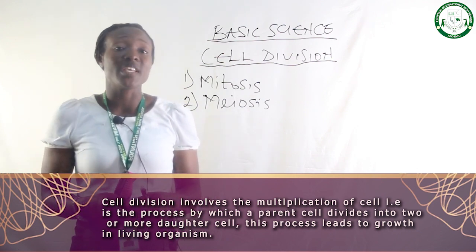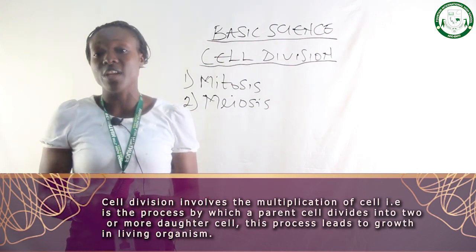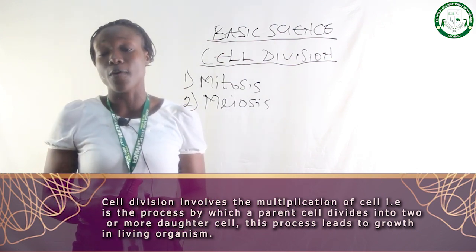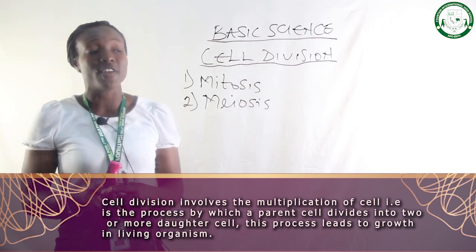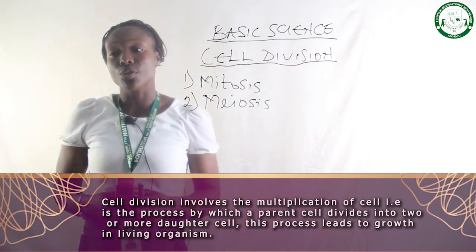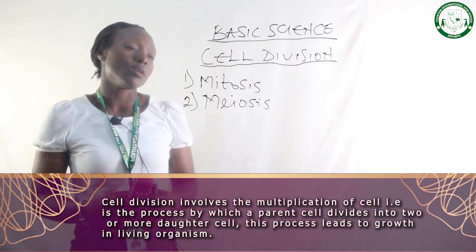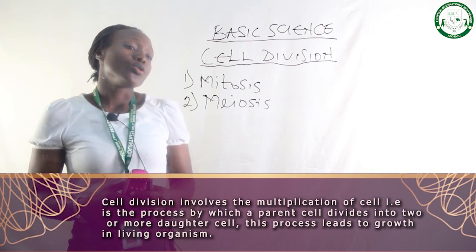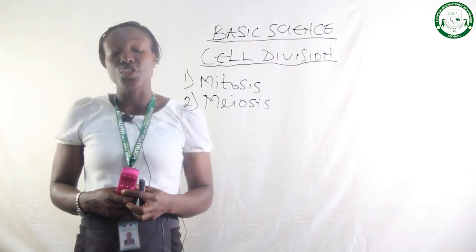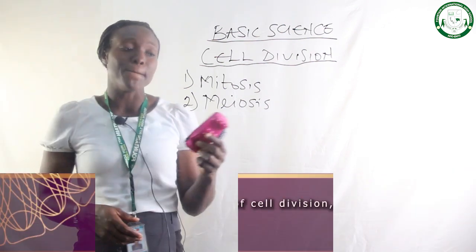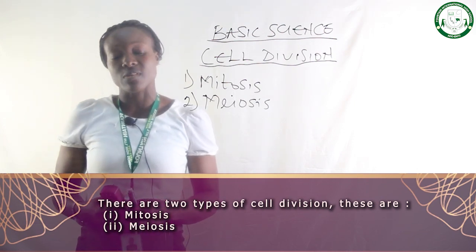Cell division is the basis of growth in every living organism. For growth to occur in every living organism, cell division must take place. We have two types of cell division in living organisms: mitosis and meiosis.